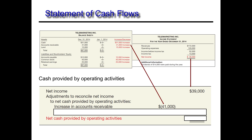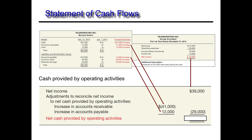We skip land because it's not a current asset, and jump down to current liabilities. We have accounts payable, which increased from $0 to $12,000. That will be an addition on the statement of cash flows — for example, a utility bill is an expense that reduced net income, but if it went onto accounts payable, it did not effectively reduce cash, so you add that back. We're adjusting net income from accrual basis to cash basis, giving us net cash provided by operating activities of $10,000. If this were negative, it would be net cash used by operating activities.